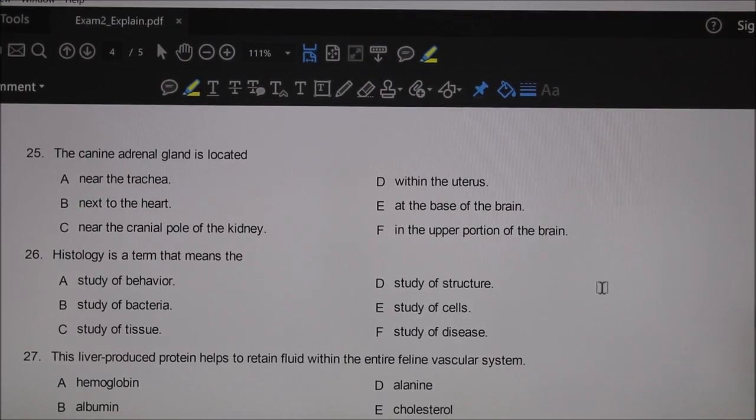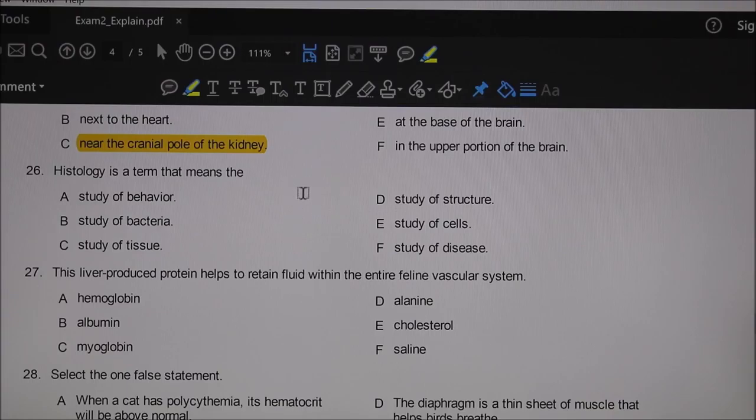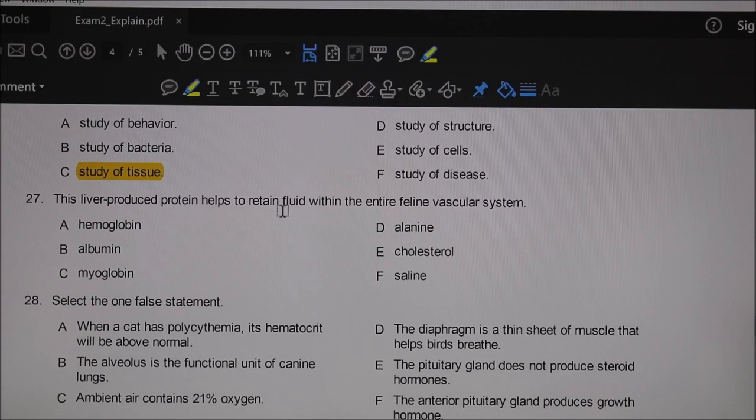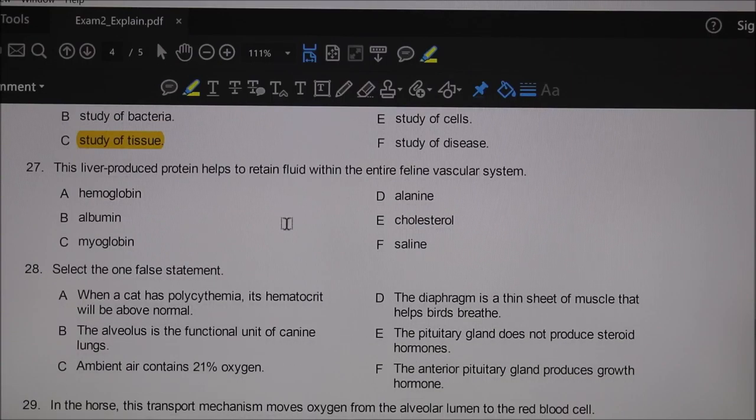Question 25: the canine adrenal gland is located—we did some anatomy in some of the lessons. The answer is near the cranial pole of the kidney. Histology is a term that means—we've said that so many times—study of tissue.